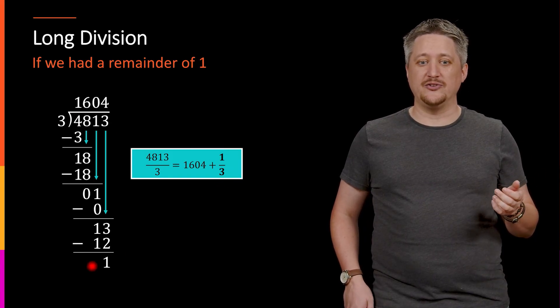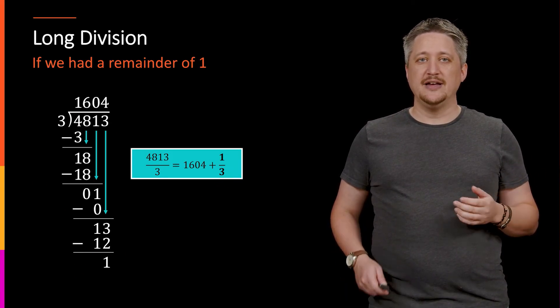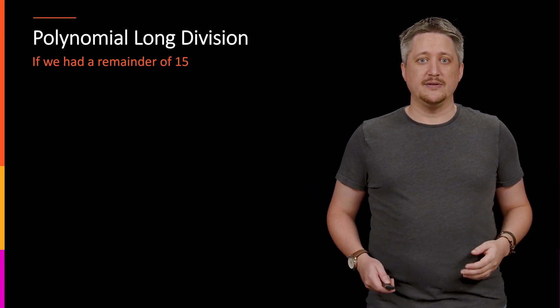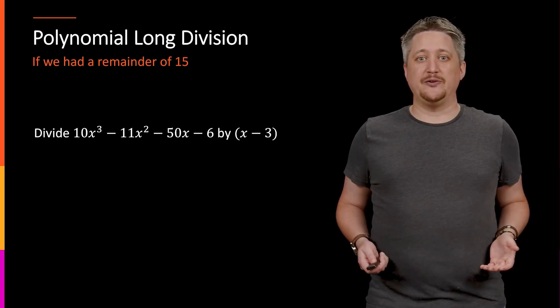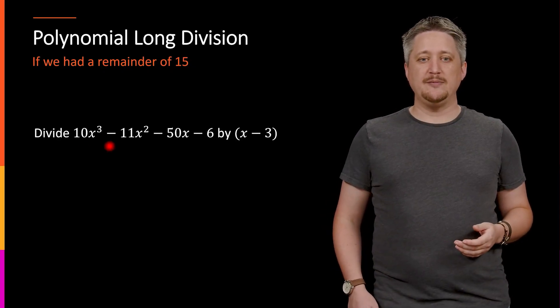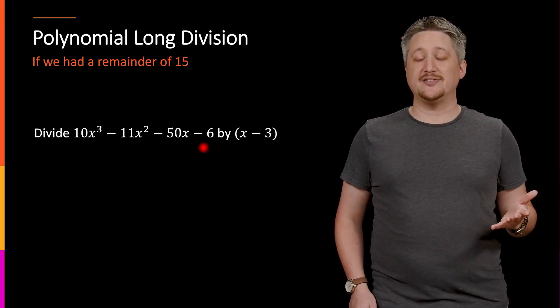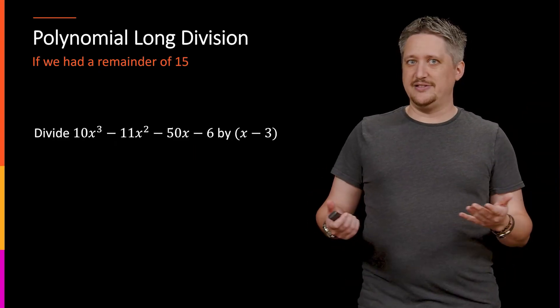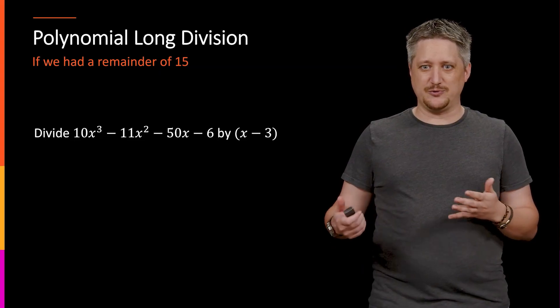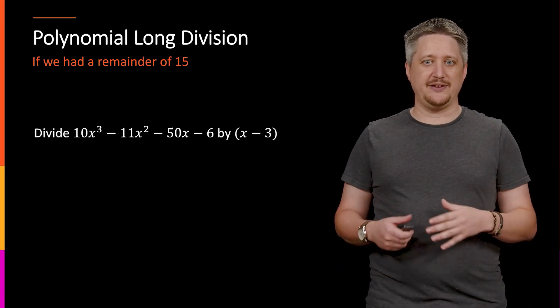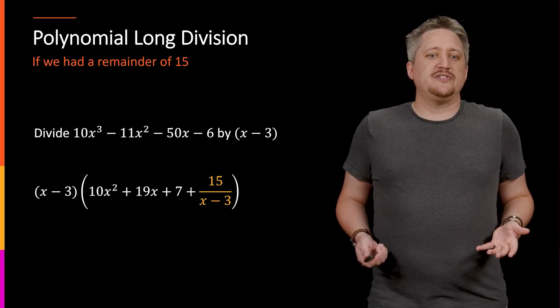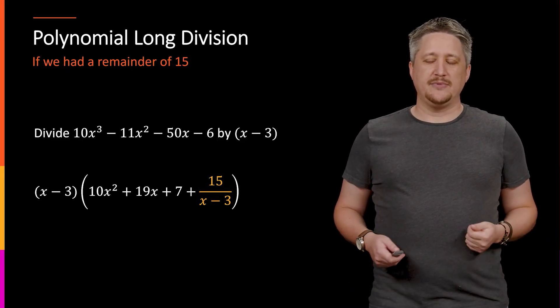So the thing I want to point out here is that this one third is generated not randomly, but it's this, it's the remainder one over the thing that we are dividing out, the three. So both of these numbers are represented in this process. And we do the exact same thing once again with polynomial long division. So if we had say a remainder of 15,